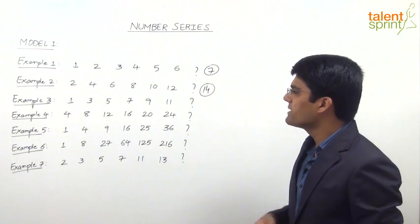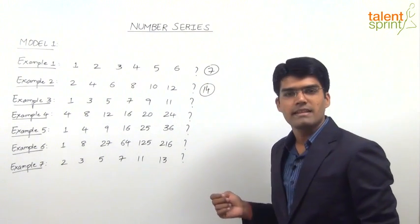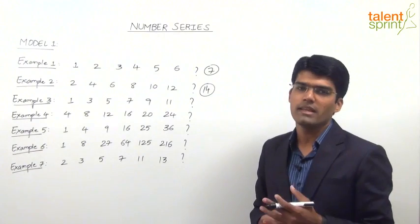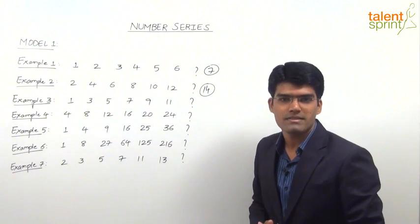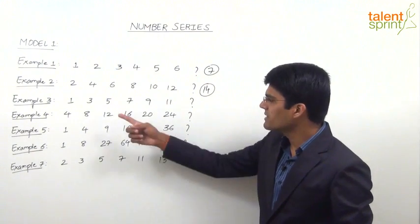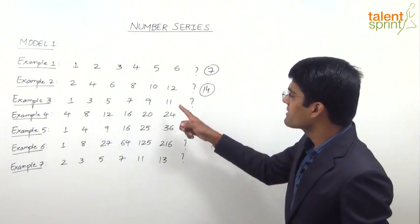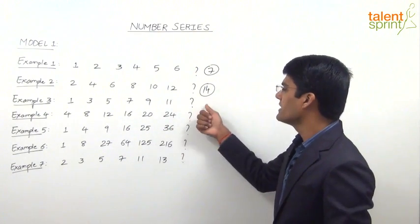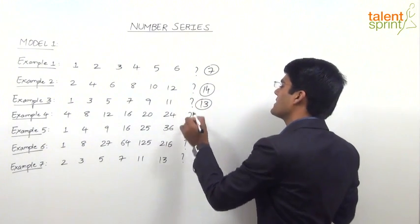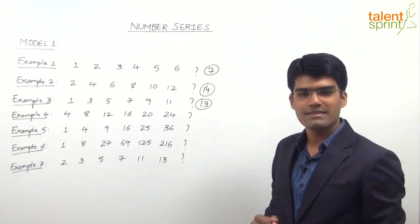The third example is 1, 3, 5, 7, 9, 11, question mark. Again, our job is to find what comes in place of the question mark. As you can observe, these are all consecutive odd numbers. So the next consecutive odd number after 11 is 13. The answer for question number 3 is 13.